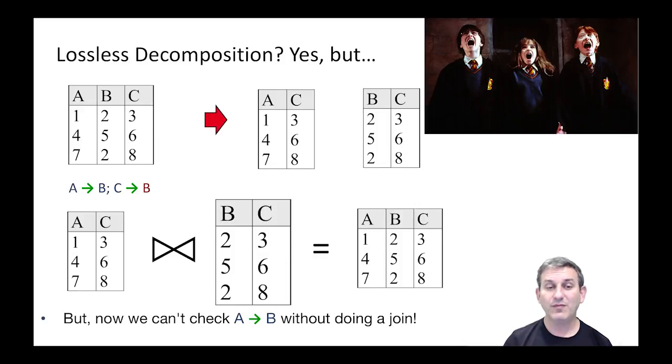The problem that remains is that we had this dependency A determines B, and now the column A and the column B are in two different tables. How will we enforce that dependency? We're going to have to do a join in order to enforce it, and that's going to make every update expensive, and that was the next problem we're worried about. So all is not necessarily well.